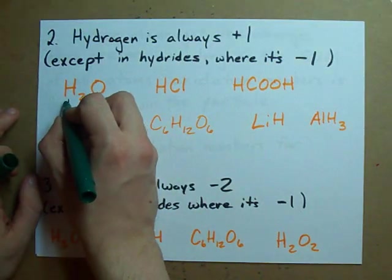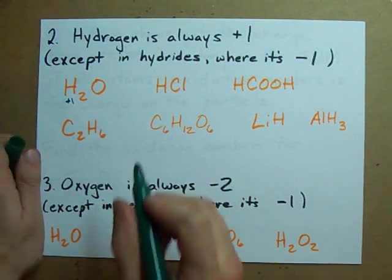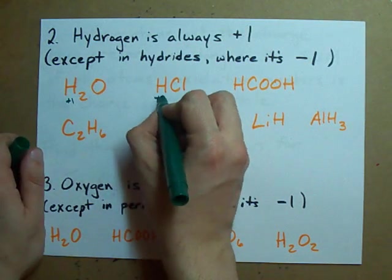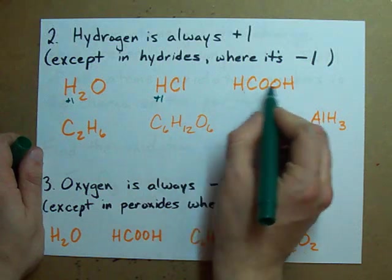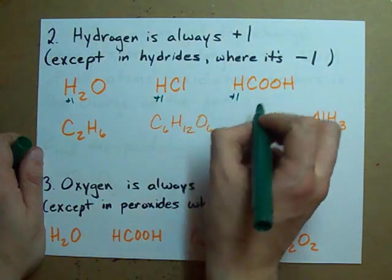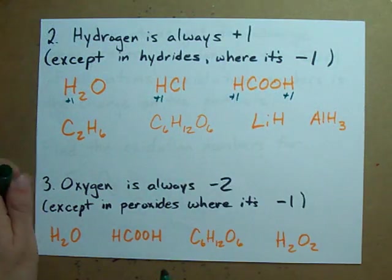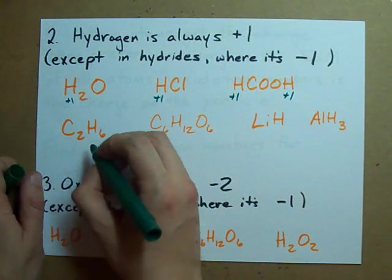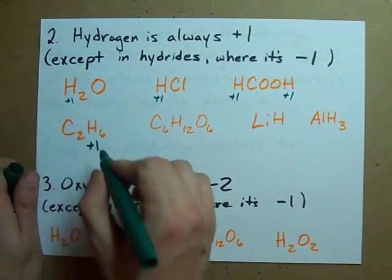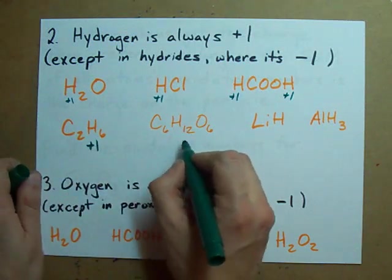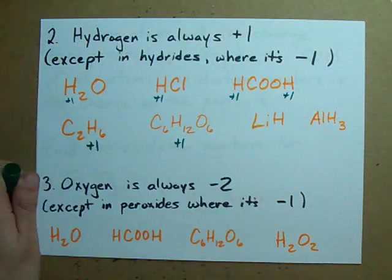There's hydrogen in water, the oxidation number of the hydrogen is plus one. Here's a hydrogen, plus one. Here's two hydrogens, this one's plus one, this one's plus one. Here are six hydrogens, each one of them is plus one. Here's twelve hydrogens, they're all plus one.